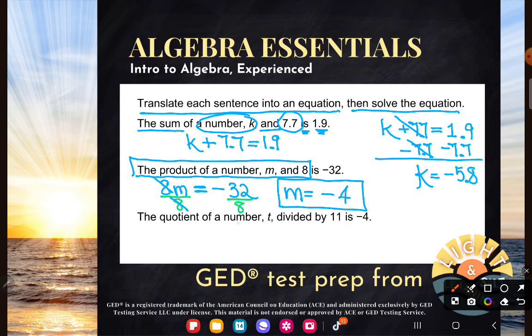Finally, the quotient of a number T divided by 11 is negative 4. There's definitely a clue here that quotient is a division expression. And I just wanted to use divided by so it was clear what order we were going in. So the quotient of a number T divided by 11